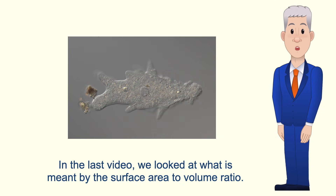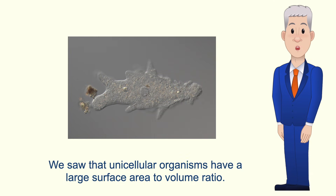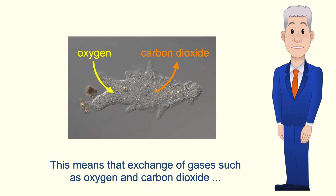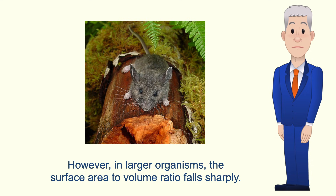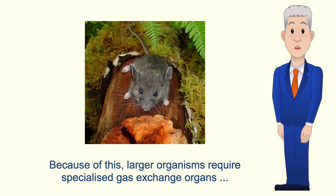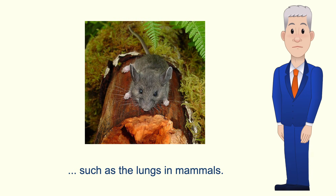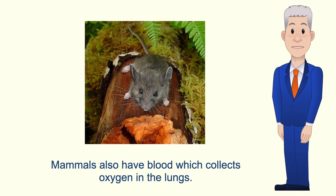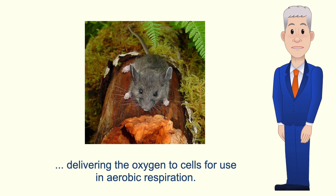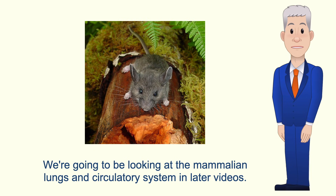In the last video we looked at what's meant by the surface area to volume ratio. We saw that unicellular organisms have a large surface area to volume ratio, meaning that exchange of gases such as oxygen and carbon dioxide can take place directly across the cell membrane. However, in larger organisms the surface area to volume ratio falls sharply, and because of this, larger organisms require specialized gas exchange organs such as the lungs in mammals. Lungs have a massive surface area allowing very efficient gas exchange. Mammals also have blood which collects oxygen in the lungs, and the blood moves around the circulatory system delivering oxygen to cells for use in aerobic respiration.